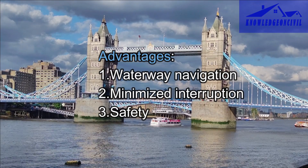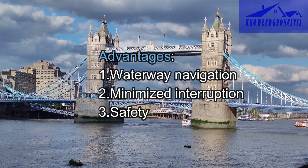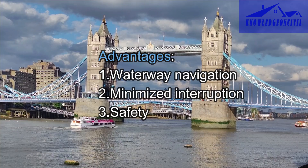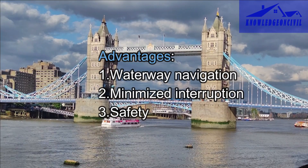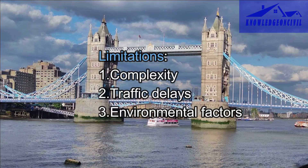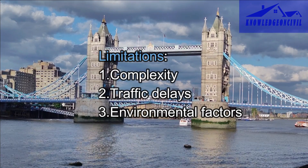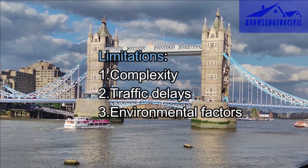Movable bridges facilitate the movement of boats, ships, and other vessels along waterways, improving maritime transportation and access. By opening only when necessary for the passage of vessels, they minimize interruptions to road and rail traffic. The controlled operation ensures the safety of both land and water traffic. However, the mechanical systems and control mechanisms can be complex, requiring maintenance and occasional repairs. The opening and closing of movable bridges can cause temporary delays for road and rail traffic, especially during peak times.